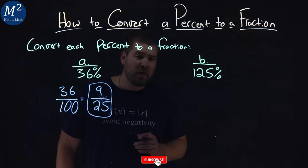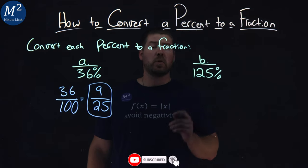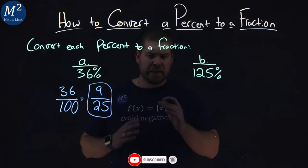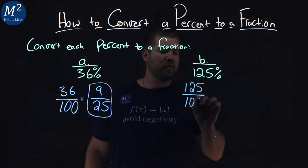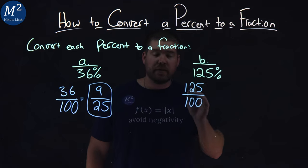All right, now let's deal with our next one here, 125 percent. Same process as before. We write 125 over 100, and we just simplify this fraction.